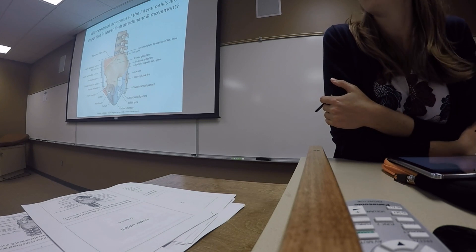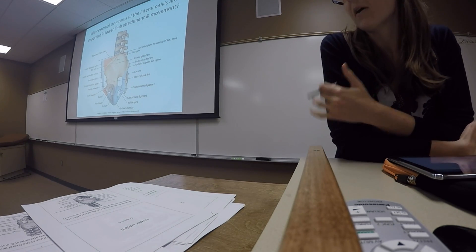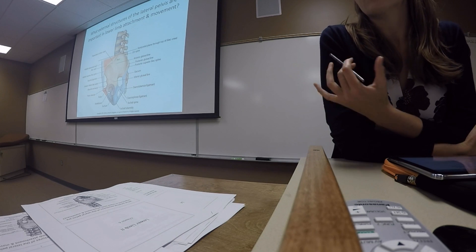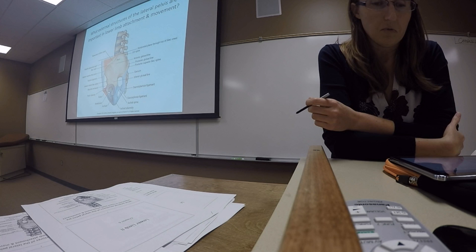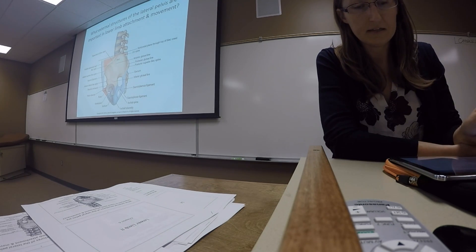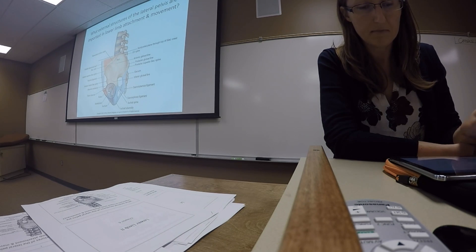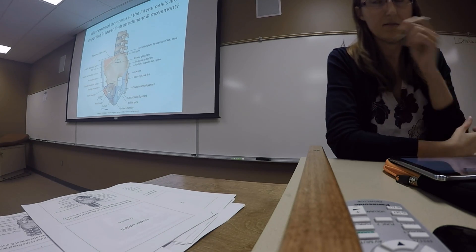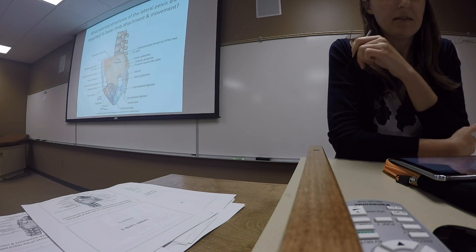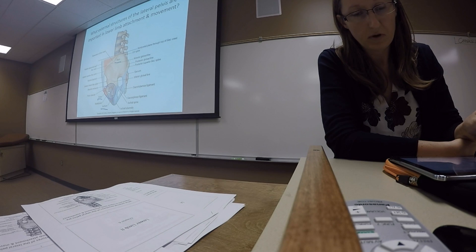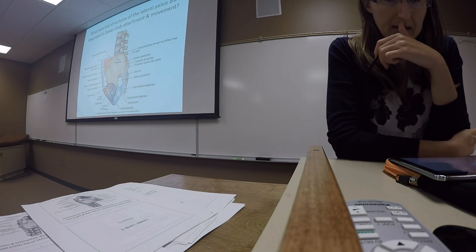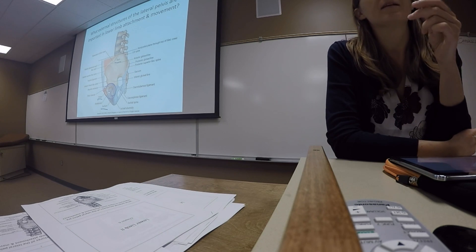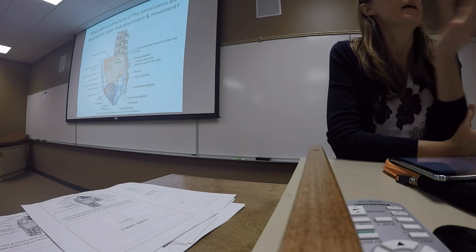First, we want to look at the structures of the external pelvis, the lateral structures. These are going to be structures that are important for lower limb attachment and movement because we've got attachment of muscles there. The first thing I want to point out is the fusion point of the three bones that make up the pelvic bone. We have the ileum, the ischium, and the pubis, which develop embryologically as three separate bones but fuse together, and that fusion point is right in the area around the acetabulum. It's going to be helpful remembering that as we learn the muscles and the ligaments in that area, to remember what bone they are attaching to.